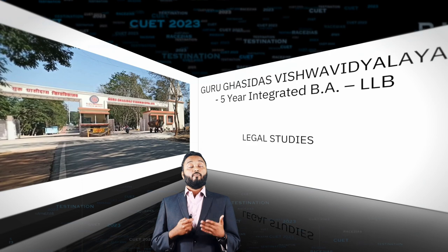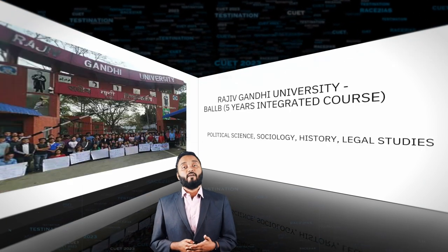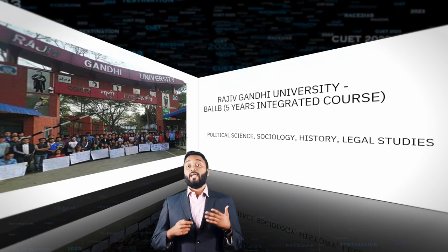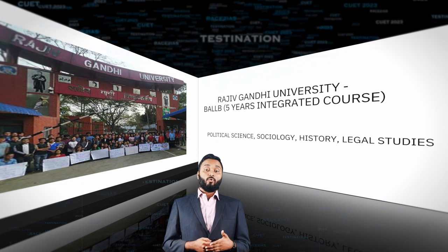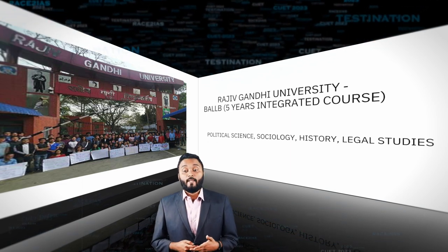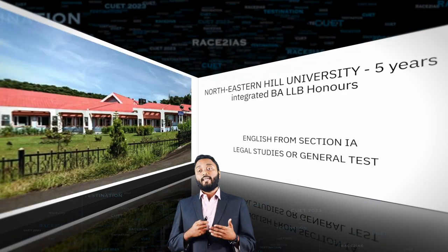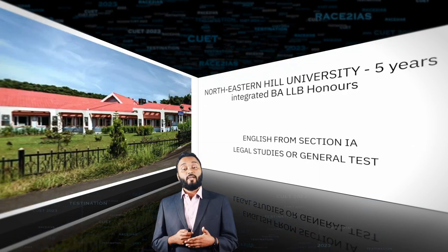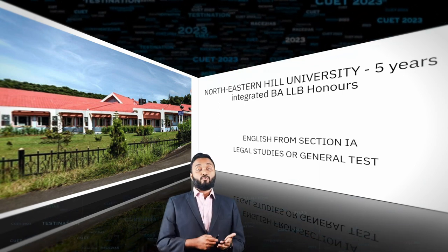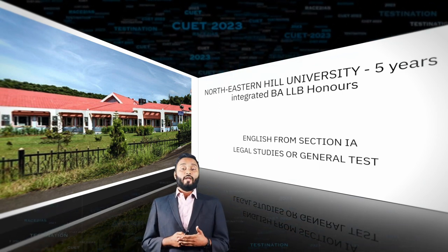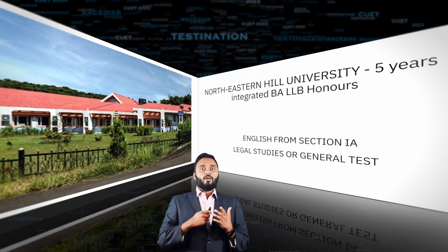Guru Ghasidas University in Bilaspur, Chhattisgarh offers a five-year integrated BA LLB course, for which you need to appear for Legal Studies. Rajiv Gandhi University in Arunachal Pradesh also offers a five-year integrated BA LLB, requiring Political Science, Sociology, History, or Legal Studies. Finally, North Eastern Hill University offers a five-year BA LLB Honors, requiring English in Section 1A plus Legal Studies or a General Test paper.